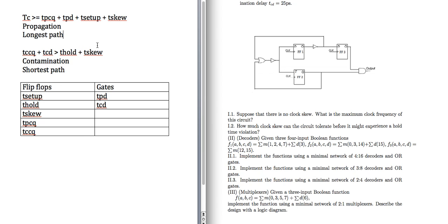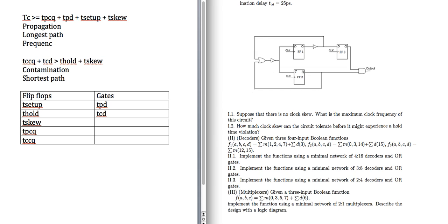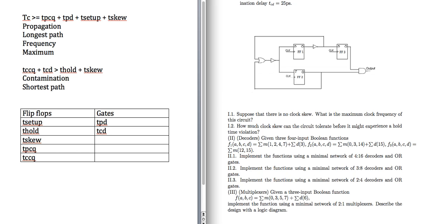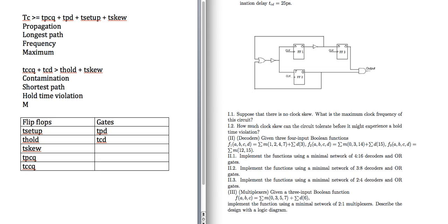I'm going to group the formulas into two different groups. If you see frequency, you need to use the setup-time formula. If you see propagation, longest path, or maximum, same formula. If you see hold time violation or something like minimum, then you know you need to use the hold-time formula.